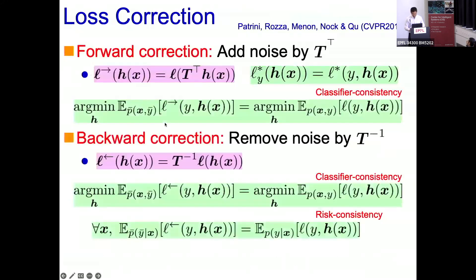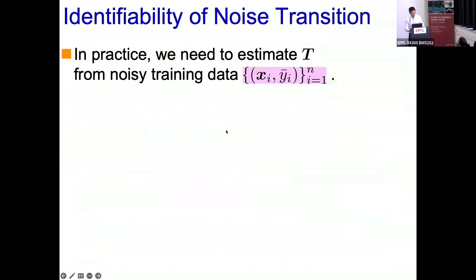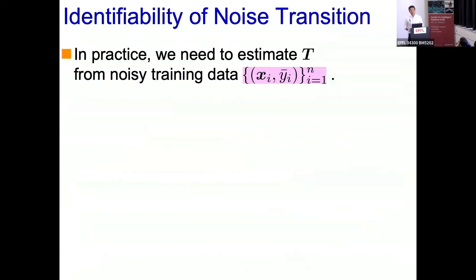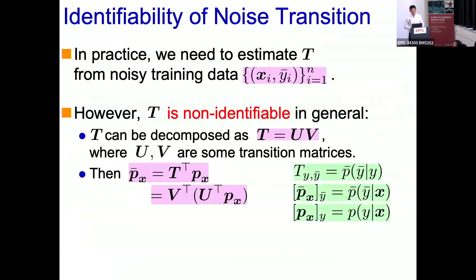The second method is called backward correction. Since T adds noise, T inverse basically removes noise — they apply T inverse to the vectorized loss function, weighting each element. Using this backward loss function, they can show both classifier consistency and risk consistency: the minimizer agrees, and the true risk can be estimated in an unbiased way. So if T is given, consistency can be guaranteed. This is good theory, but in practice we don't know T. How to estimate T from noisy data — that's the starting point of our research.